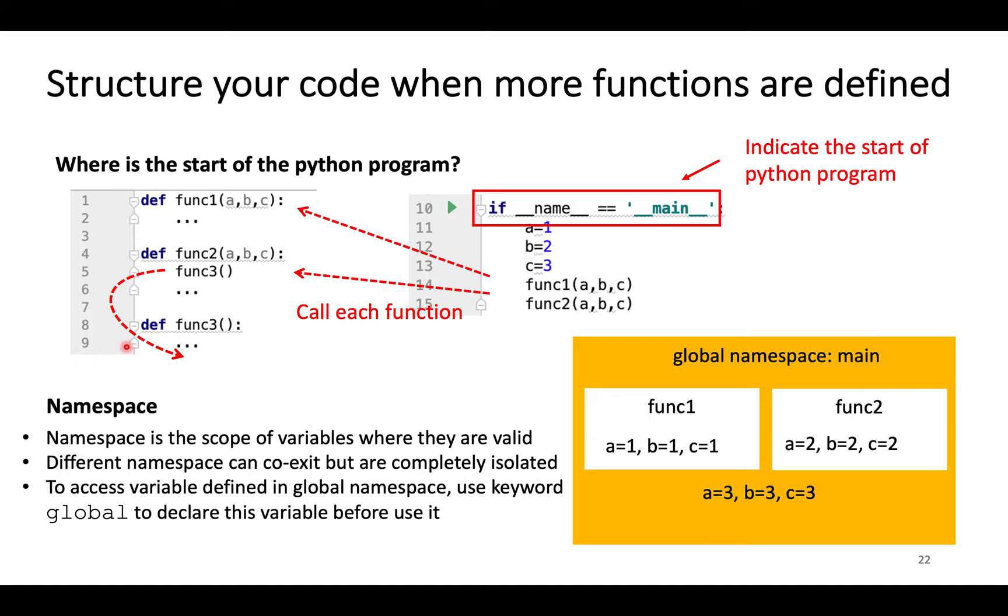The variables in function 1, function 2, and the main program have the same names, A, B, C. So how to distinguish them?